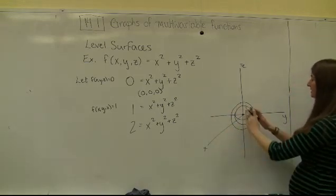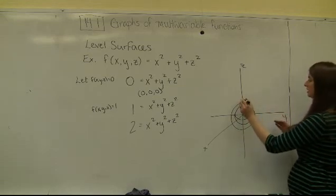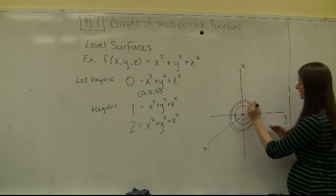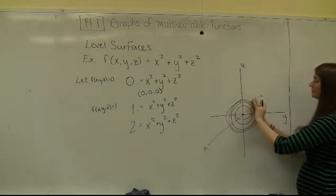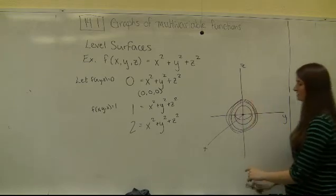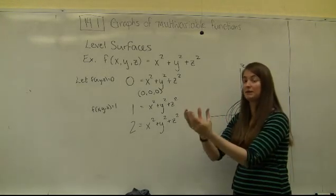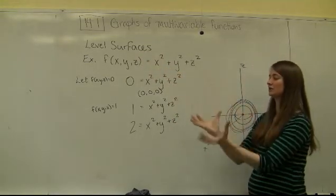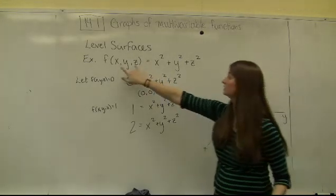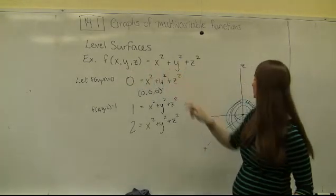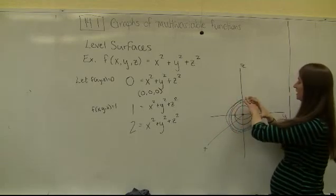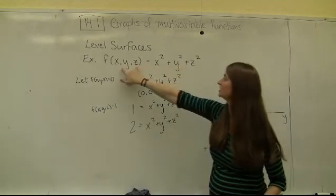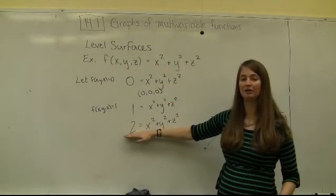If we keep thinking about these level surfaces, it's like a bunch of nested spheres — an innermost sphere, a sphere a little bigger, and so on. They're called level surfaces because everywhere along a given sphere the output values are exactly equal. Every point on the outermost sphere, when plugged into the function, has an output value of 2.